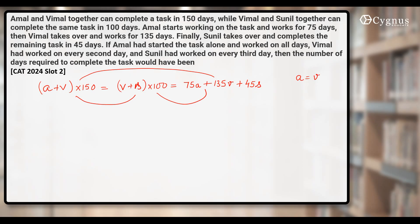We'll get A is equal to V and 2A is equal to S. What does it mean? Amal and Vimal are equally efficient while Sunil is twice as efficient as Amal. So let's assume that Amal can do one unit per day. So Vimal will also do one unit. And Sunil, since he's twice as efficient as Amal, will do two units per day.